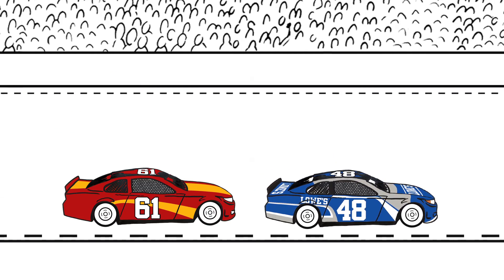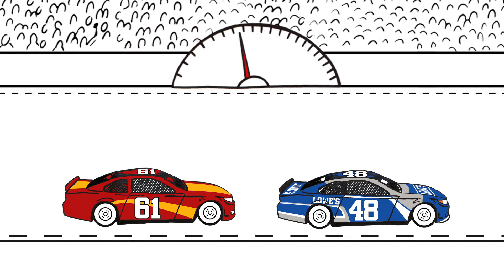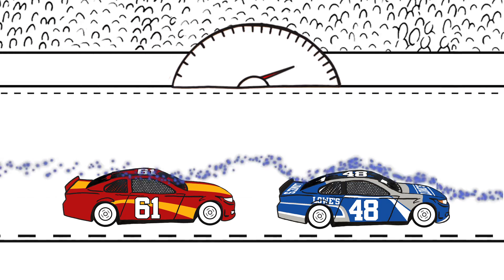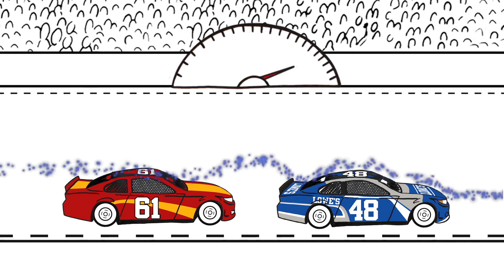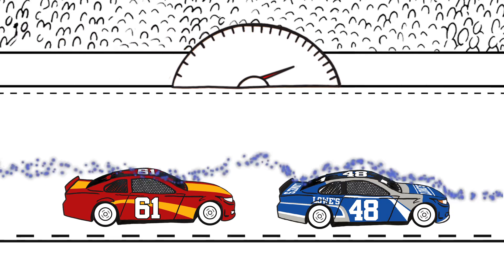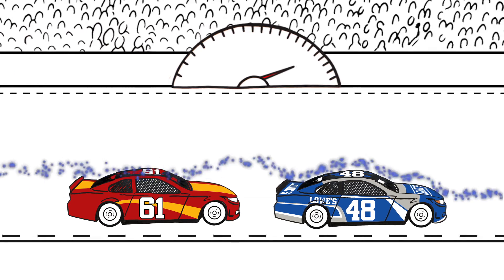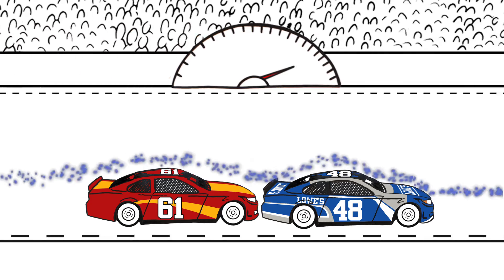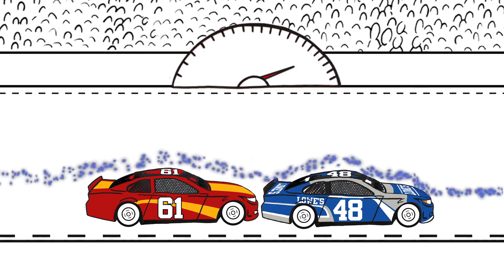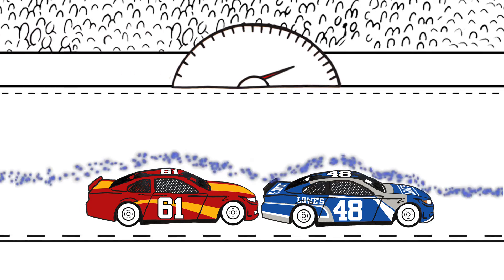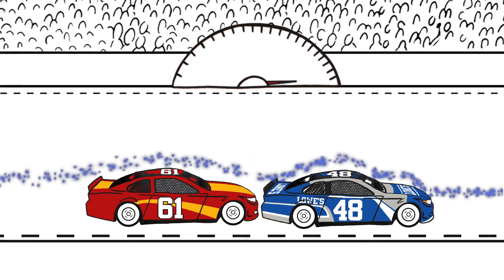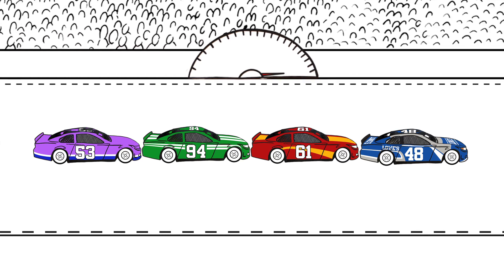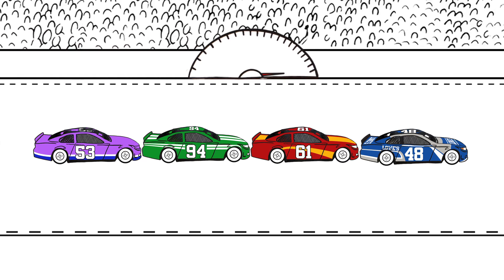When two cars are close together on the track they're able to go faster because of drafting. The car in front breaks the air, leaving a pocket behind that the second car can drive through with much less air resistance. The pocket of broken air sucks the two cars towards each other. Together the two cars act like one big car. With drafting, two cars can go faster than one car by itself by as much as five miles per hour. And when you get a bunch of cars together in the draft, everyone gains a ton more speed — and there's nothing cooler than speed.